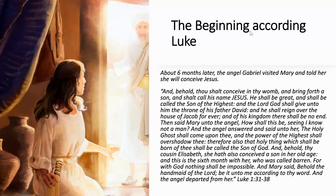Luke 1:31-38: 'And behold, thou shalt conceive in thy womb and bring forth a son, and shalt call his name Jesus. He shall be great and shall be called the Son of the Highest. The Lord God shall give unto him the throne of his father David, and he shall reign over the house of Jacob forever, and of his kingdom there will be no end.' Then Mary said to the angel, 'How shall this be, seeing I know not a man?' And the angel answered, 'The Holy Ghost shall come upon you, and the power of the Highest shall overshadow you. Therefore, that holy thing which shall be born of you shall be called the Son of God. And behold, your cousin Elizabeth has also conceived a son in her old age, and this is the sixth month with her who was called barren. For with God nothing is impossible.' And Mary said, 'Behold the handmaid of the Lord; be it unto me according to your word.' And the angel departed from her.